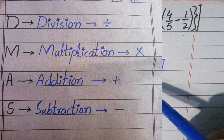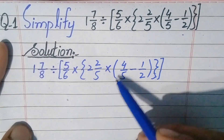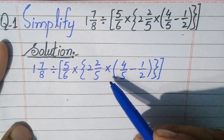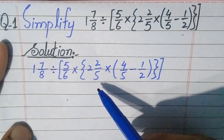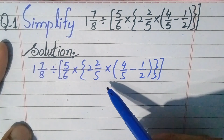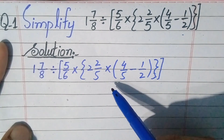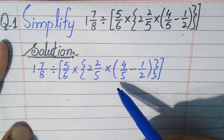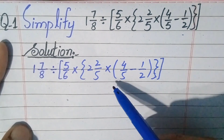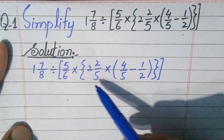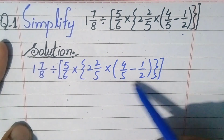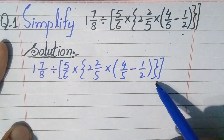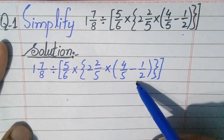Now let's start solving this math problem. My dears, look at this question — there are many operations, so we will use BODMAS rule here. According to BODMAS rule, the first letter B stands for Brackets, so first of all we will simplify the brackets. There are three types of brackets: parentheses, braces, and square brackets. So first we will solve parentheses, then braces, and finally square brackets.